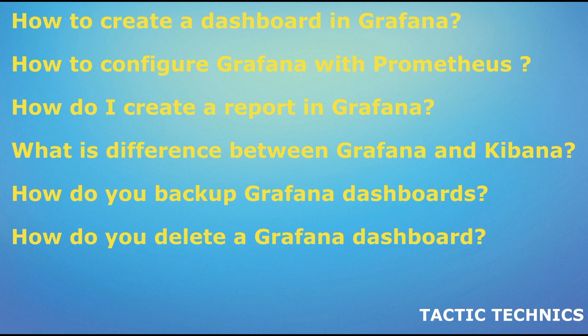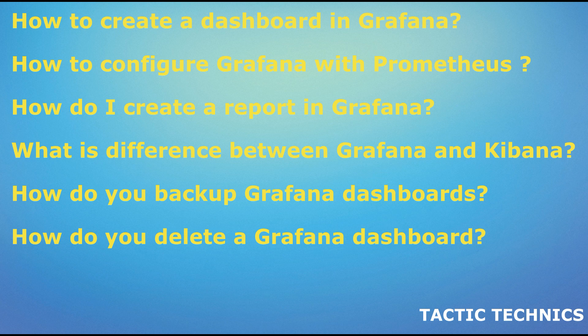How do I create a report in Grafana? To create a report in Grafana, follow these steps: Log into the Grafana web interface. Go to the dashboard that you want to use for the report. Click on the share dashboard button and select snapshot. Configure the snapshot options such as the time range, the refresh rate, and the width and height of the report. Optionally, add a title and description for the report and choose to include the panel titles, the Grafana logo, and other elements in the report. Click on the create button to generate the report. You can then download the report as a PDF or PNG file, or share the report by sending a link or embedding it in a web page.